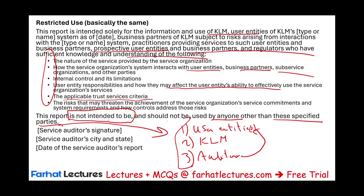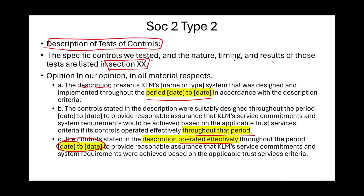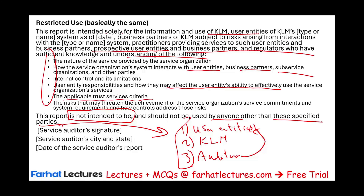Then we sign, date, service auditor, city, and state. What I went over is SOC 2 Type 1 and Type 2 back to back. Bear in mind that we have opinions other than unqualified — qualified, adverse, and disclaimer — and we'll look at those reports later on. Keep that in mind as you're going through SOC 1 and SOC 2, important concepts for the CPA Information Systems and Controls section. Go to Farhat Lectures, complete MCQs, complete your work so you can perform well on the CPA exam. Good luck, invest in yourself, and stay safe.